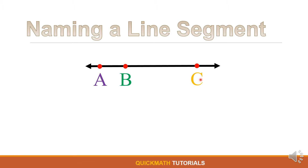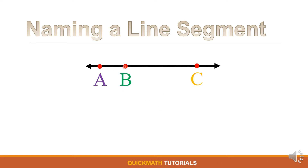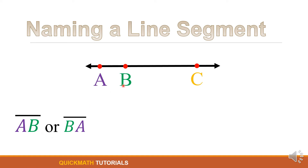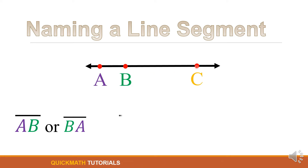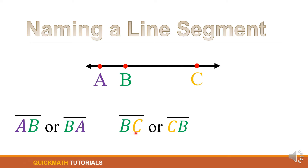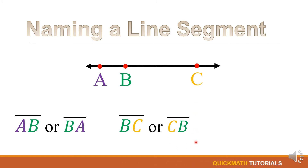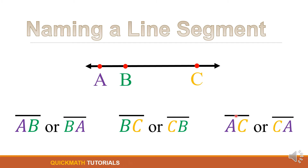We will name the line segments which are part of this line. First, we have the line segment from A to B, which we can name as line segment AB or line segment BA. Another line segment is from point B to point C. And there is also a line segment from A up to C, which you can name as line segment AC or line segment CA.